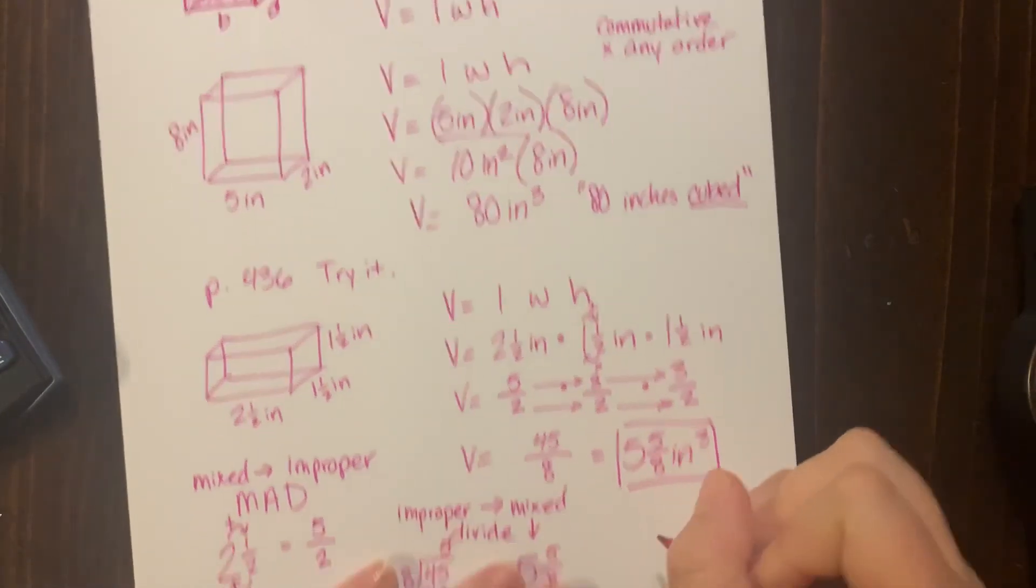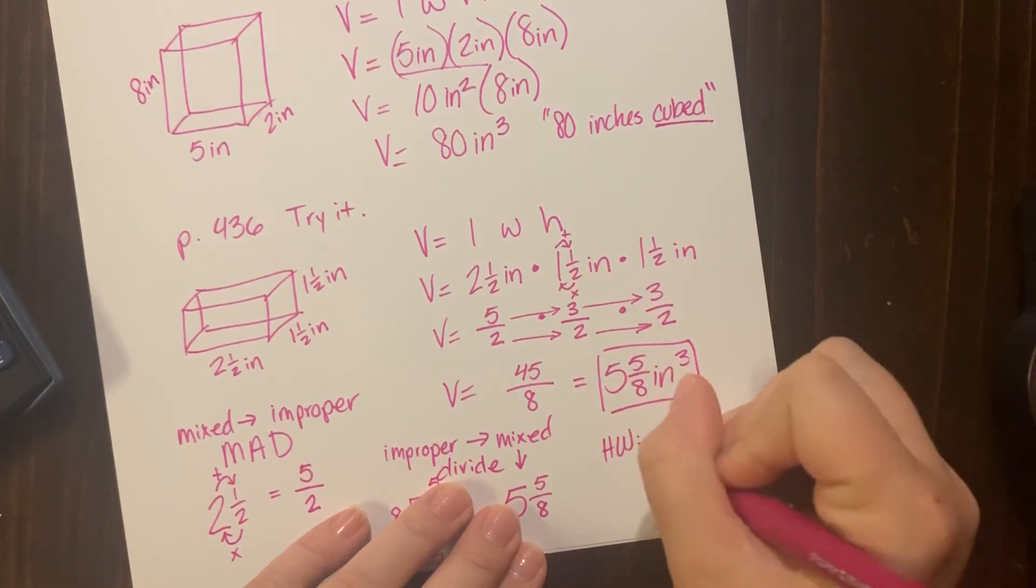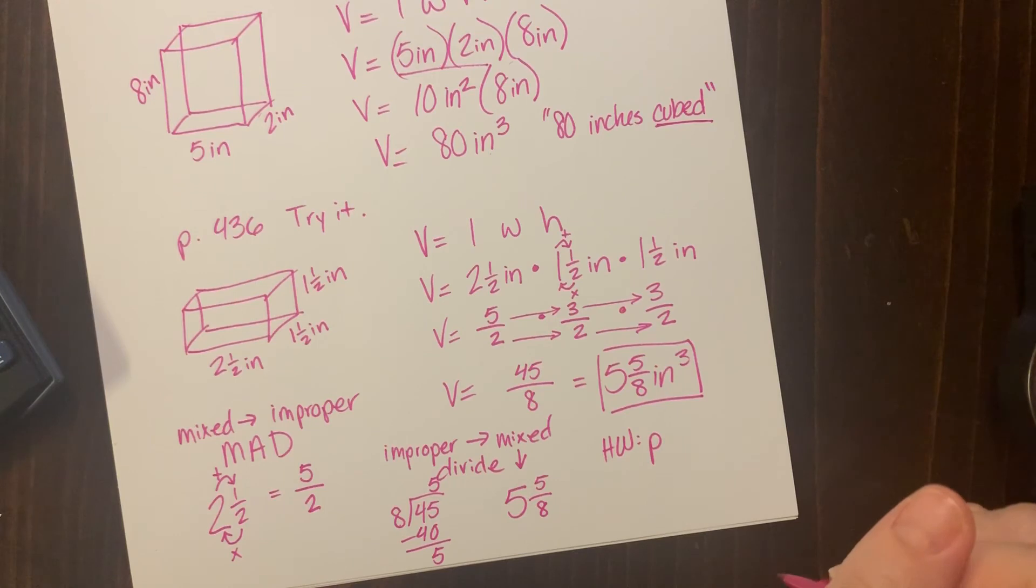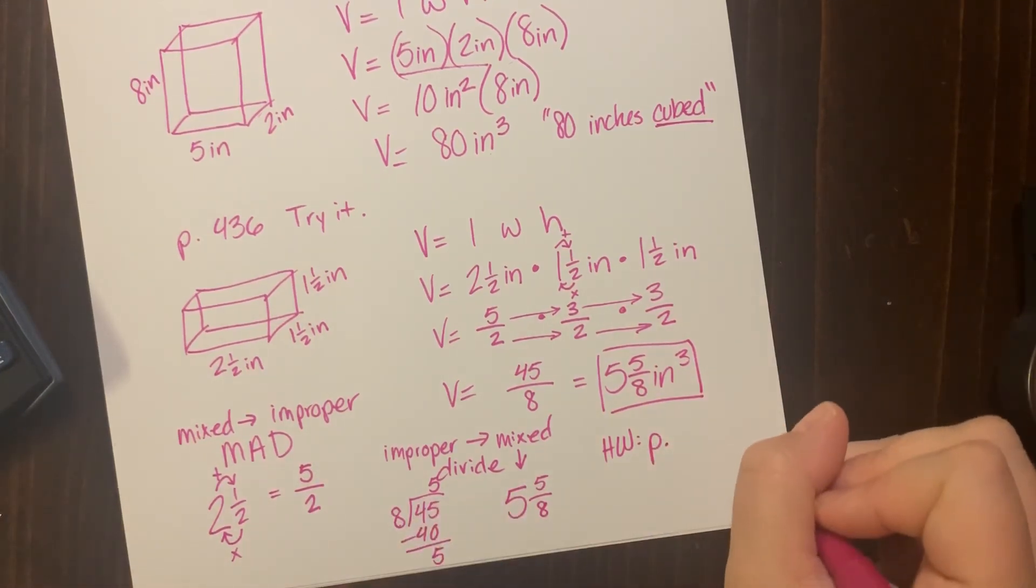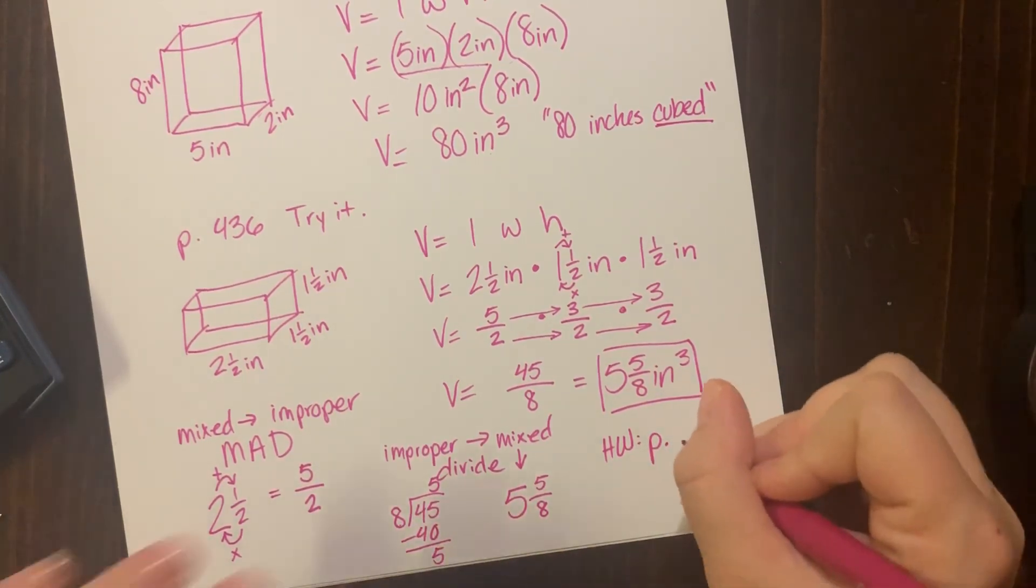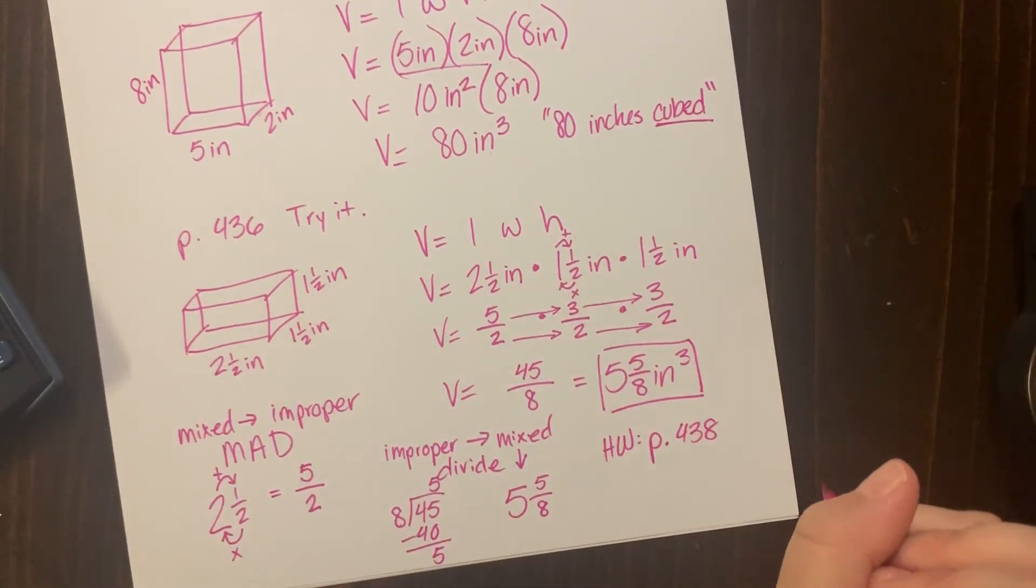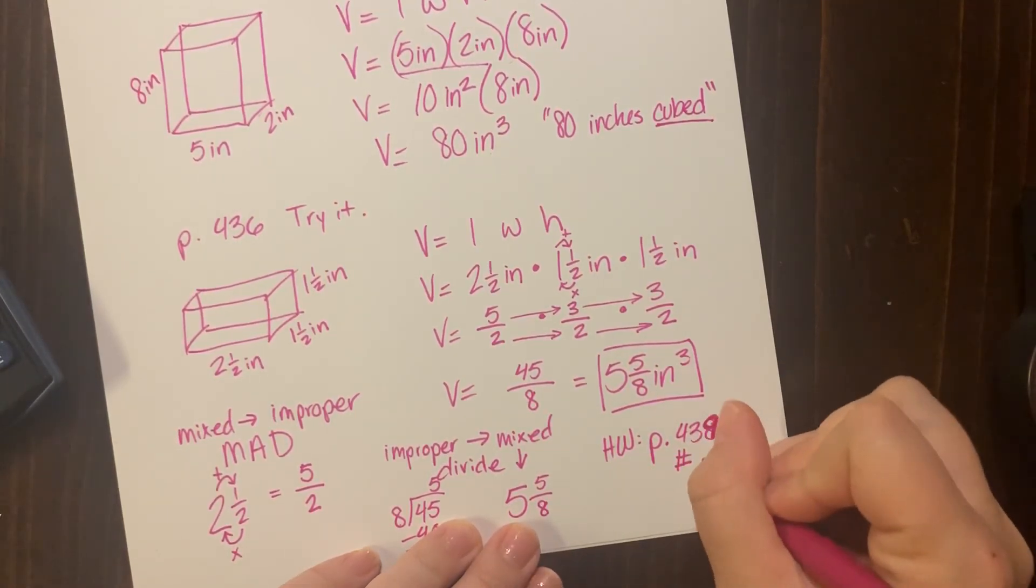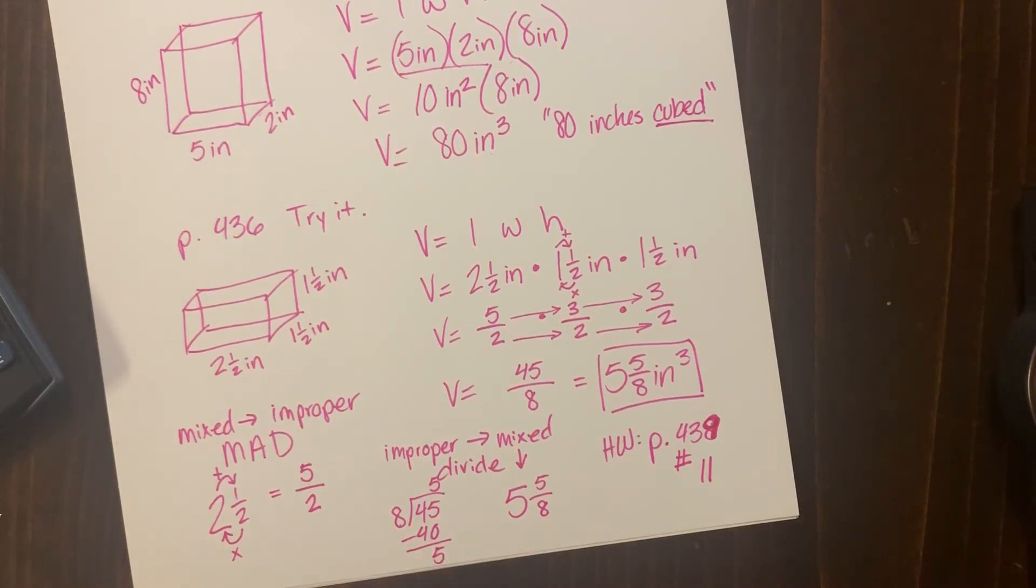So for homework, because I know it is Friday, I don't want to bog you guys down. We're going to do one problem for practice. We're going to do—you know what, I take that back. We're going to do two problems. I'm sorry. 438. I'm such a mean teacher.